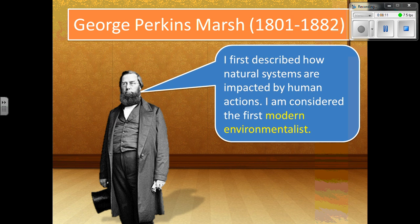George Perkins Marsh was very much interested in how nature — the physical environment — is affected by humans. He was considered the modern environmentalist, very much concerned with how humans have mostly negatively affected the environment. But it's also important to realize it's not all bad — humans can have a positive relationship with the environment as well.